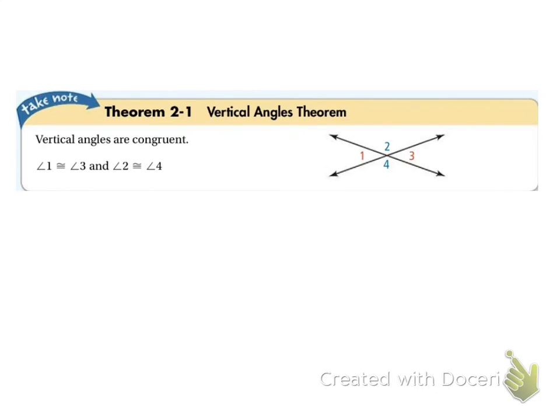This is section 3.2a of geometry. We've got quite a few theorems in this section. Theorem 2.1, the Vertical Angles Theorem, says that vertical angles are congruent. So angles 2 and 4 are congruent, and angles 3 and 1 are congruent.